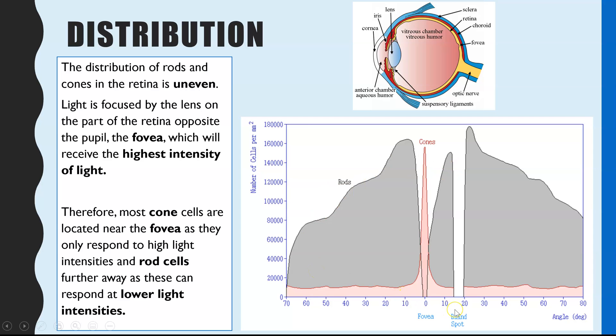Final thing to point out, it's not on the spec, but this bit here, the blind spot, this is the part of the retina which has no rod cells and no cone cells. So there are no photoreceptors and no light can be detected at that particular point in the retina.